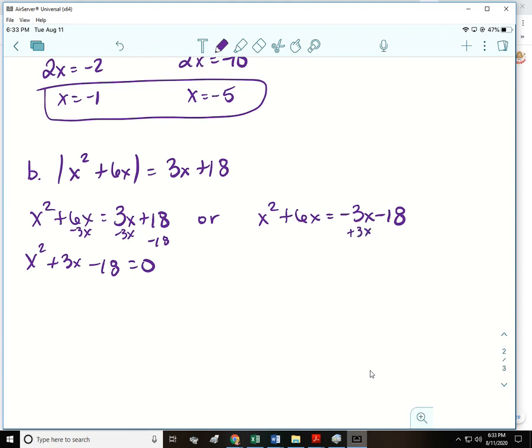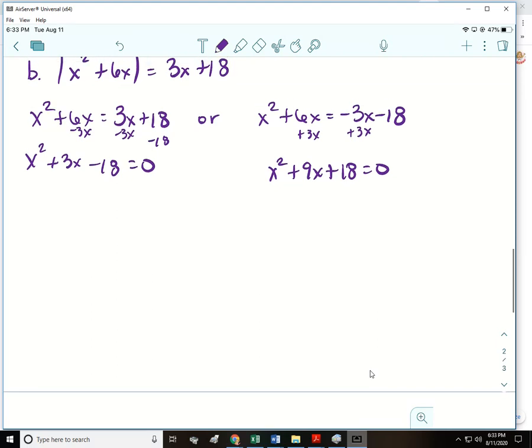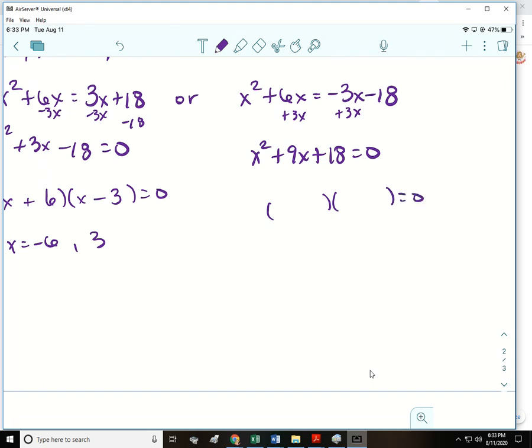We do similar things over here, we would add the 3x and move the 18 over. So from here it's just fairly simple factoring. x is going to be negative 6 and 3, and then over here x is negative 6 and negative 3. So I would go ahead and just write combine those together so negative 6, 3, negative 3 are your three solutions.